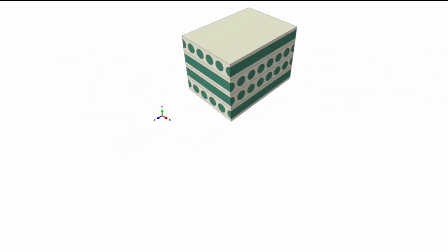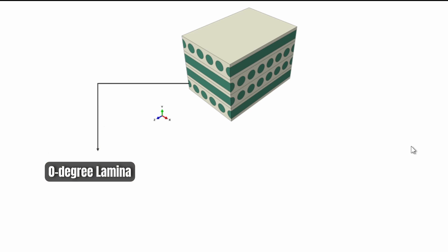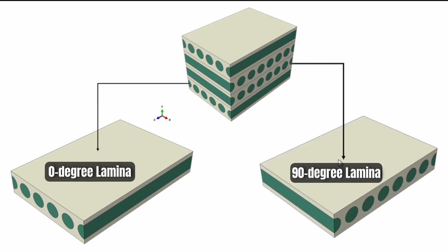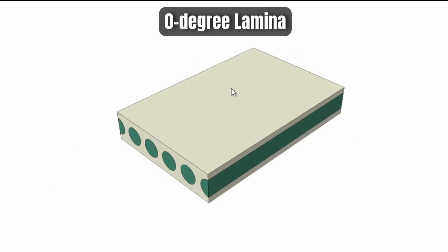Looking at the structure more closely: we have the 0-degree laminate oriented along the z-axis, and also the 90-degree laminate. We're going to create them separately and then bring them all together as we assemble this bi-directional composite.